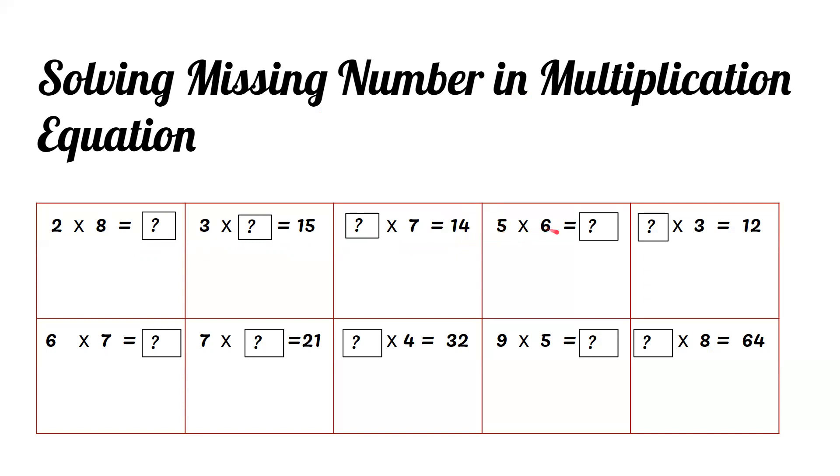5 times 6 equals what? 5 ones are 5, 5 twos are 10, 5 threes are 15, 5 fours are 20, 5 fives are 25, 5 sixes are 30, so the answer is 30.